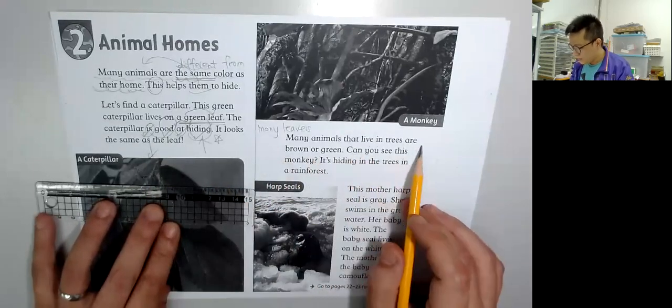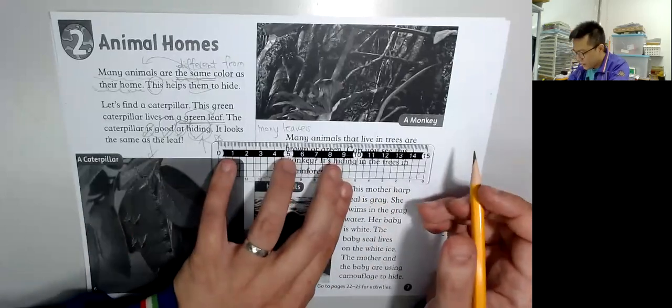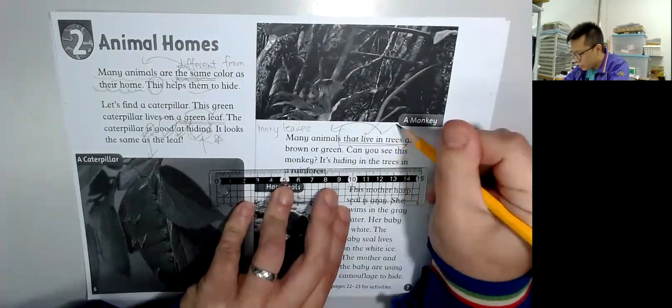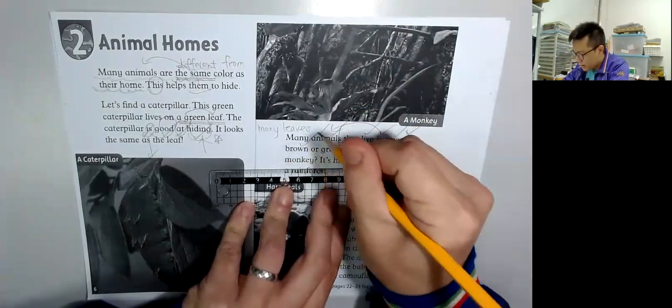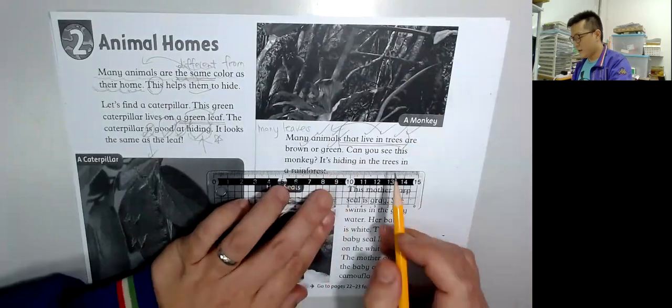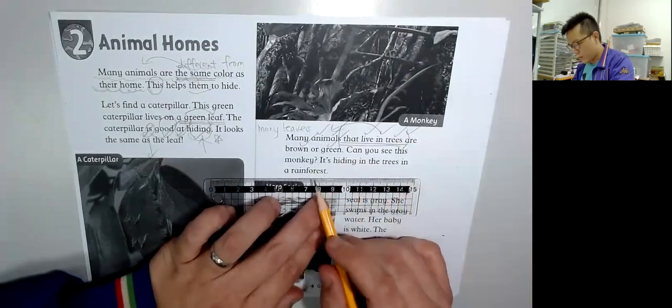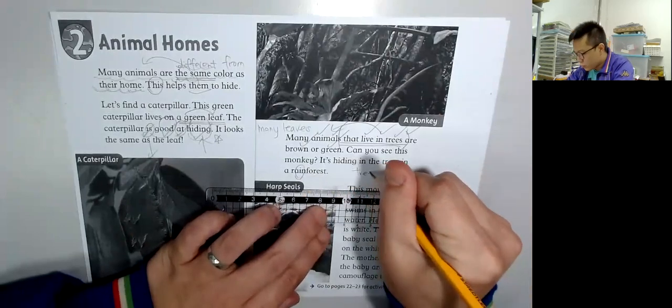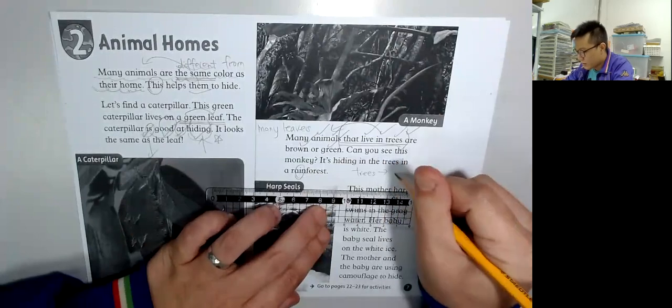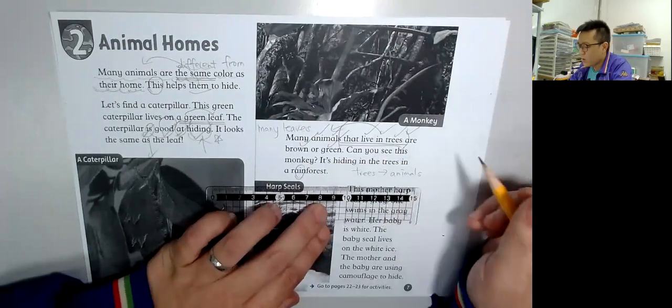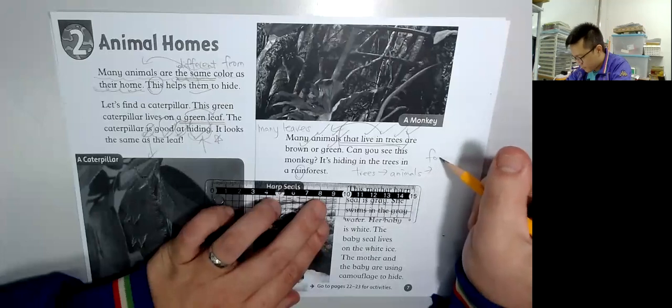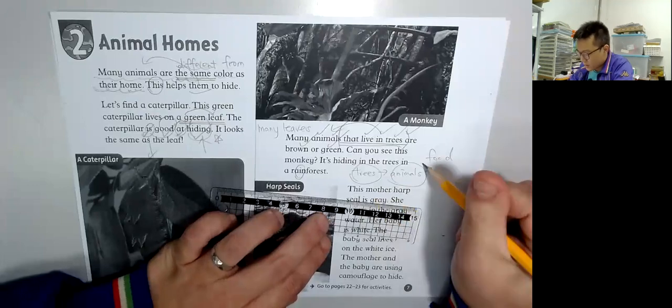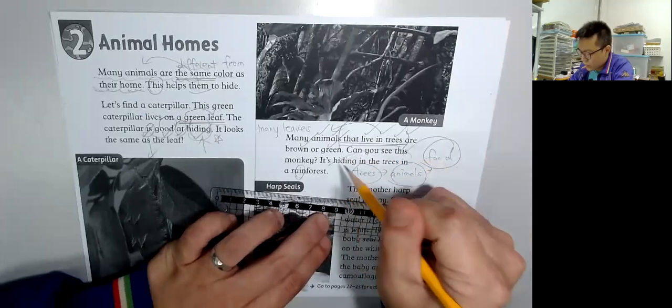Many animals that live in the trees are brown. Can you see this monkey? It's hiding in the trees in the rainforest. Rainforest 最多就是 rain. 當 rain 多的時候就 trees 多, trees 多的時候就自然 animals 都會多,因為那裡有食物. So there are many trees, there are many animals, there is a lot of food in a rainforest.